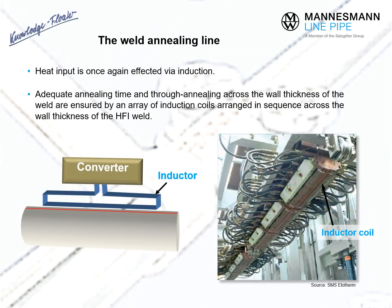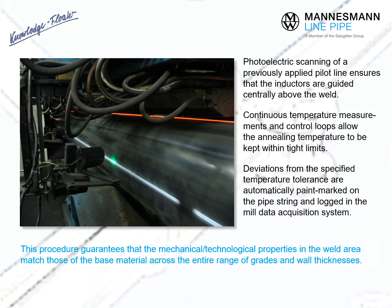In the annealing line, heat input into the weld area is also done by means of induction. Adequate annealing time and through-annealing across the wall thickness is ensured by an array of induction coils arranged in sequence just above the weld area. Photoelectric scanning of a pilot line applied after welding ensures that the inductors are precision-guided centrally above the weld. Continuous temperature measurements and control loops keep the annealing temperature within tight limits. Deviations from the specified temperature window are automatically paint-marked on the pipe string and logged in the mill data acquisition system together with their location, ensuring that mechanical and technological properties in the weld area match those of the base material.